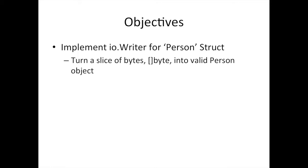Previously we took a person, turned their age into a byte, and passed that to Write. But now we actually want to say: I have a Person, I want to implement the io.Writer for it, and therefore I should be able to call Write on a Person object and pass it a slice of bytes. If those bytes represent a person, I can turn that slice of bytes into a valid Person. Let's see how to implement this, but first let me say this is not really contrived.